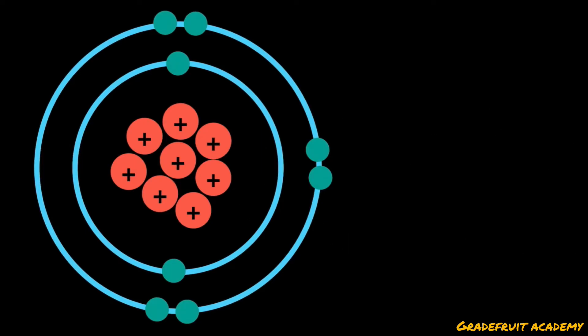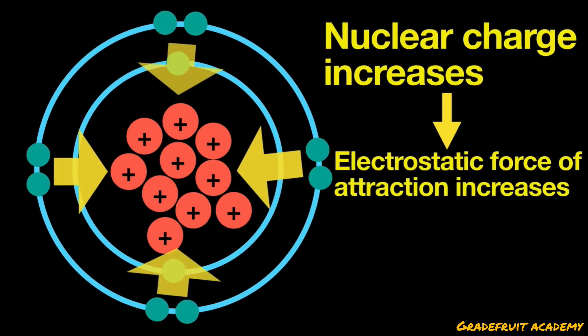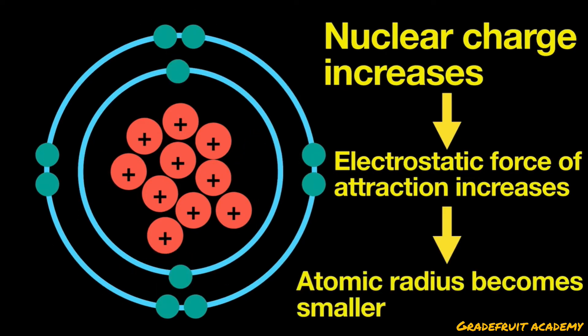So when the number of protons in an element increases, the nuclear charge increases and this in turn causes the electrostatic forces of attraction between the nucleus and the valence electrons to increase, thereby making the atomic radius smaller.